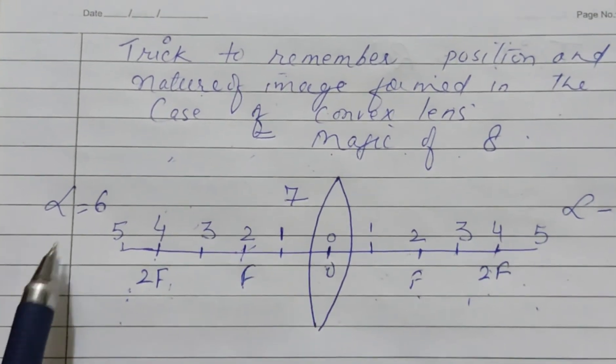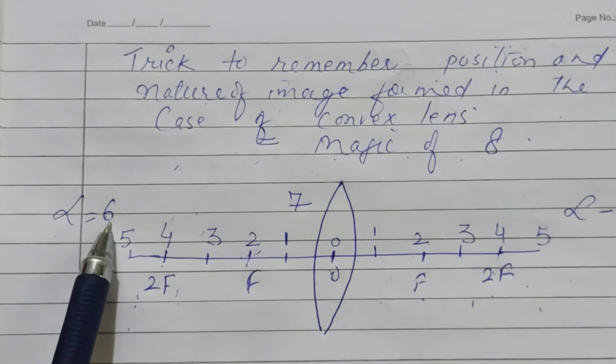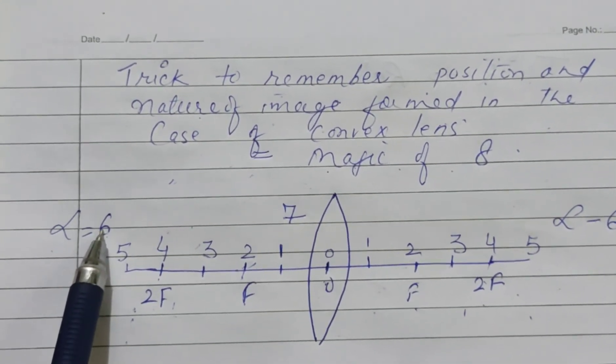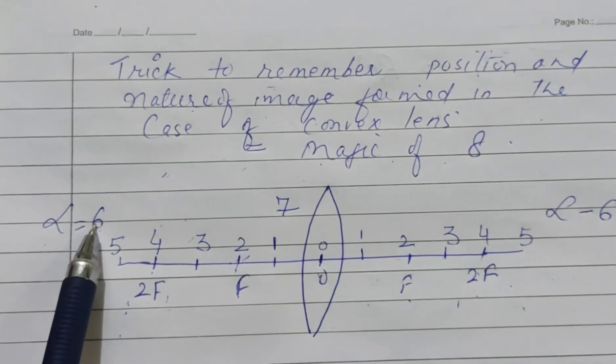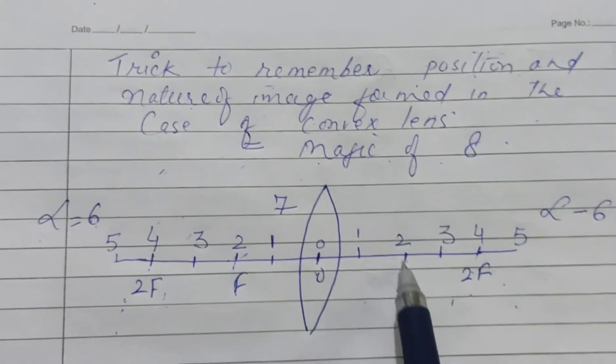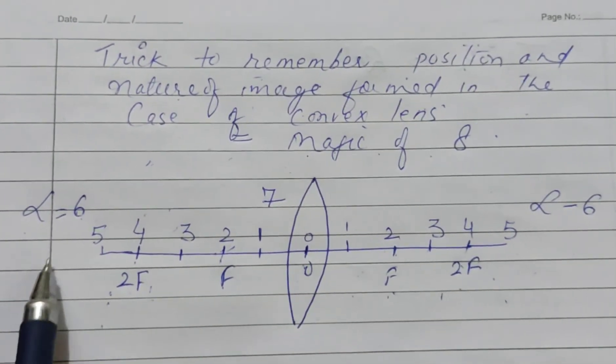Let us suppose the first object is at position 6, means object is at infinity. So where will the image be formed? Where this 6 number adds up to give you 8—so it is 2 at this side. What is the position for point 2? That is f.